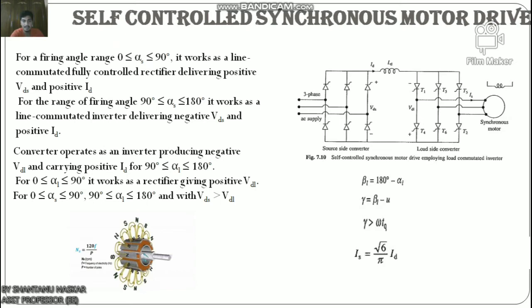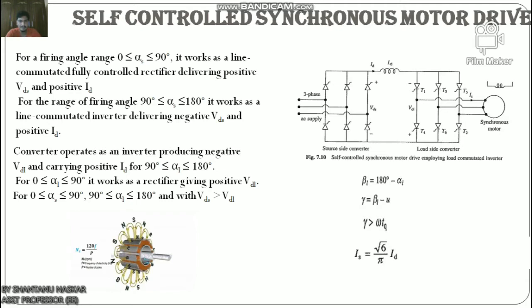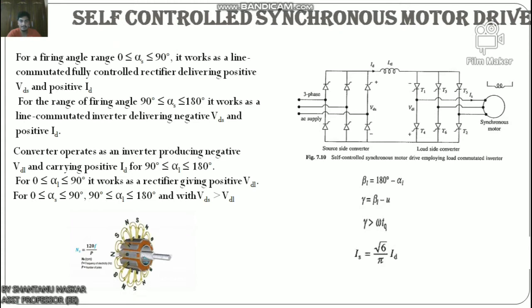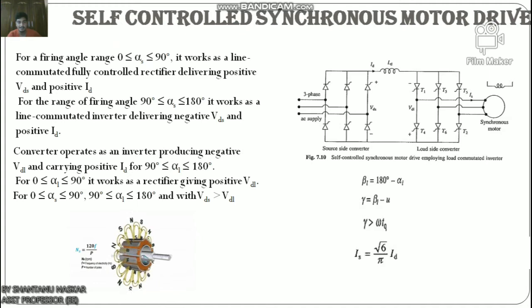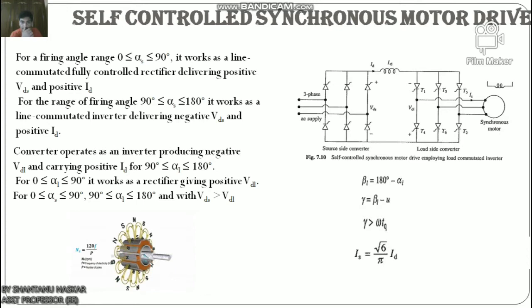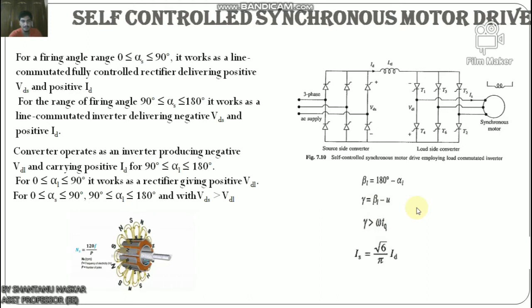The damper winding does not play its conventional roles of starting the machine as an induction motor and damping oscillations, because rotor and rotating field speeds are always the same. In a simple control scheme, the drive is operated at a fixed commutation lead angle βlc for the load-side converter working as an inverter, with β1 = 180° − α1 and α1 = 0°. When good power factor is required to minimize converter rating, the load-side converter working as an inverter is operated with constant margin angle control.